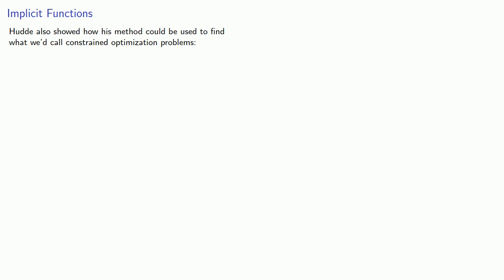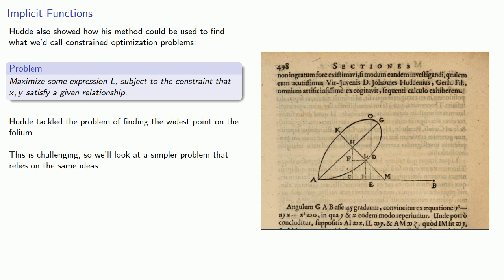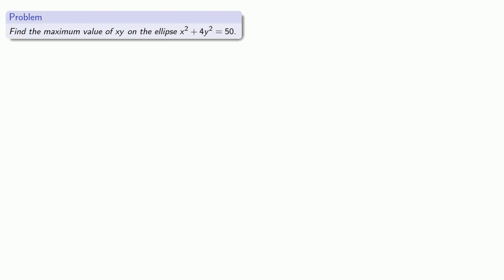Hood also showed how his method could be used to find what we'd call constrained optimization problems. This is maximize some expression subject to the constraint that x and y satisfy a given relationship. Hood tackled the problem of finding the widest point on the folium, but this is very challenging, so we'll look at a simpler problem that relies on the same ideas.